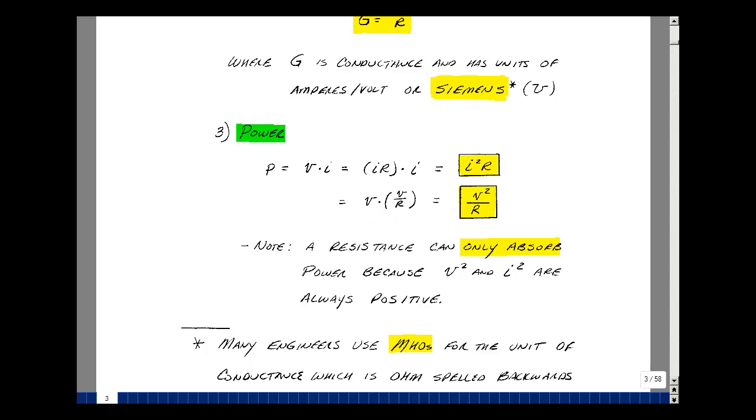So power can be voltage times current, I squared R, or V squared over R. So we've got three different ways of calculating that.